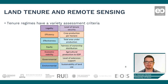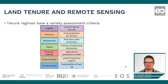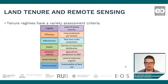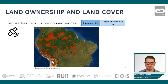Since we have understood more or less what land tenure is and why we can't really monitor it with remote sensing, let's have a look at examples where we can see in the land cover the effects of different land tenure regimes, property rights, or management schemes. I have brought you a set of examples linked to the seven groups I have shown before.